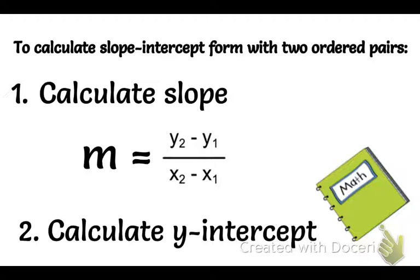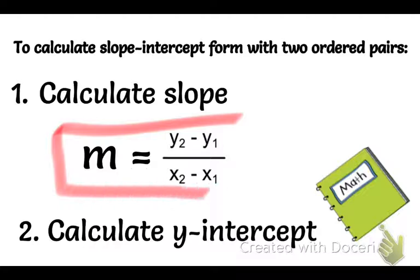Alright ladies and gentlemen, to calculate slope-intercept form with two ordered pairs that are on the line, the first thing you're going to need to do is calculate the slope. So this is just a reminder that slope is m equals y sub 2 minus y sub 1 over x sub 2 minus x sub 1. So step number one will be to calculate the slope.